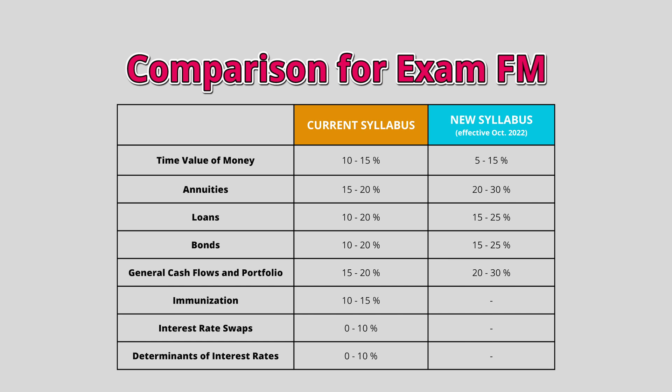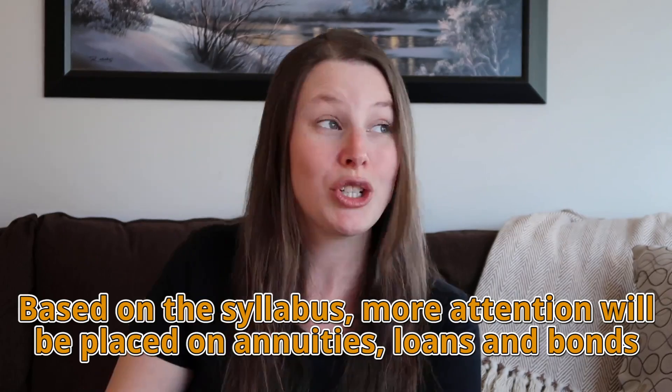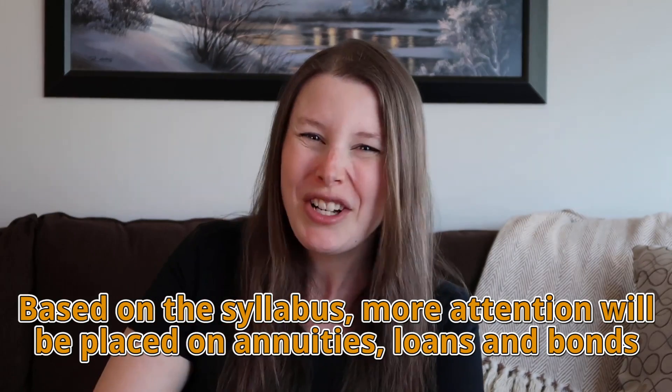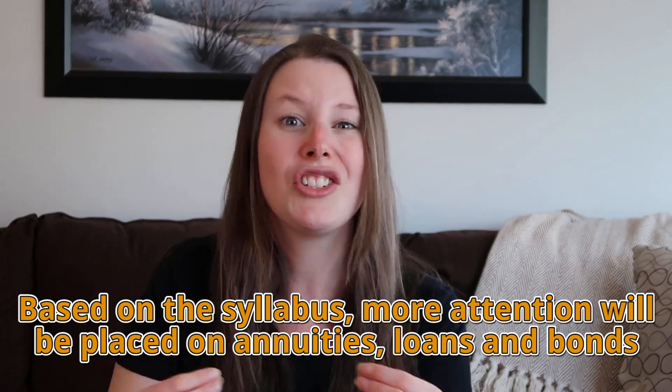On screen you're seeing a comparison of the distribution of topics tested on the exam, similar to what we looked at for Exam P. For example, annuities currently make up about 15 to 20 percent of the exam; on the new syllabus starting in October, annuities will make up about 20 to 30 percent. Interest rate swaps and determinants of interest are now 0 percent tested since they are no longer on the exam — they used to make up about 0 to 10 percent each. You can pause the video to take a closer look at that chart. Overall, there will be a bit more attention on annuities, loans, and bonds, but the distribution hasn't changed drastically so you likely won't notice much difference.